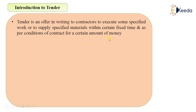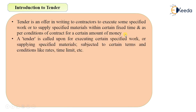There will be time mentioned in that tendering offer — the tender notice. The time will be fixed: you have to submit it before a certain date, the completion period of that particular project is fixed, and as per the conditions of contract there will be some conditions that a contractor has to follow, for a certain amount of money. Tender is obviously for the money — for some percentage benefit in the amount. You can also define a tender as: it is called upon for executing certain specified work or supplying specified material, subjected to certain terms and conditions like rates, time limit, etc.